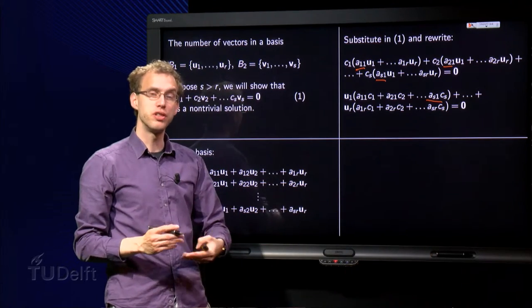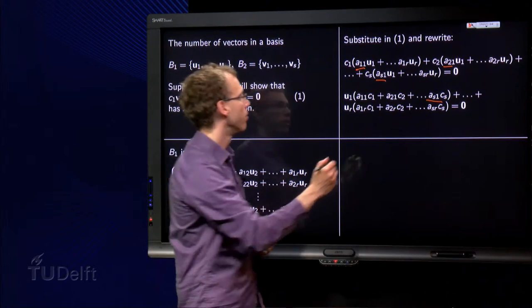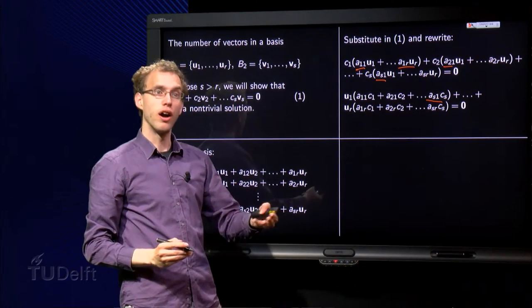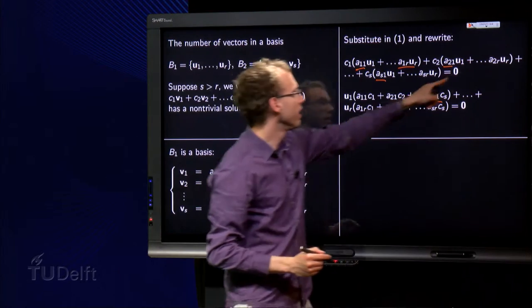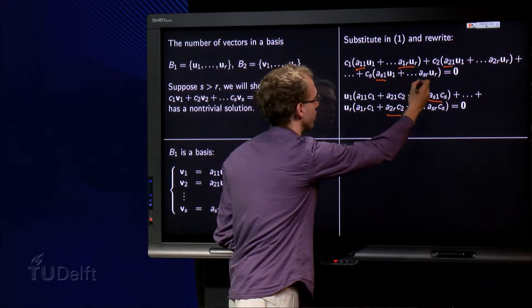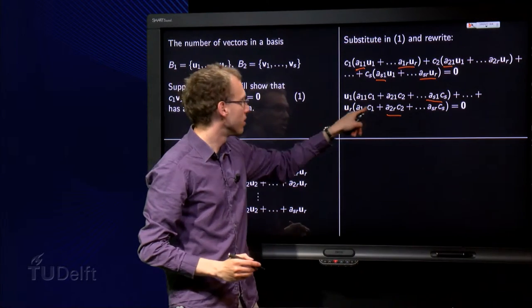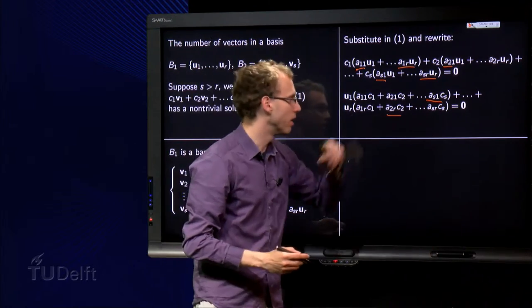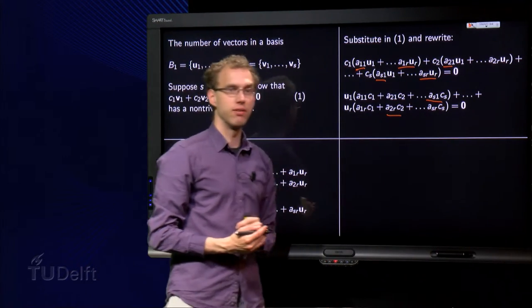And then we do the same for u₂, we do the same for u₃, etc., until uᵣ. What do we have for uᵣ? Well here we have a uᵣ term, a₁ᵣ times c₁, so this term over here. Here we have a uᵣ, a₂ᵣ times c₂, up to the last term over here, aₛᵣ times cₛ. So we have a₁ᵣ times c₁, a₂ᵣ times c₂, a₃ᵣ times c₃, etc., up to aₛᵣ times cₛ, equals zero.